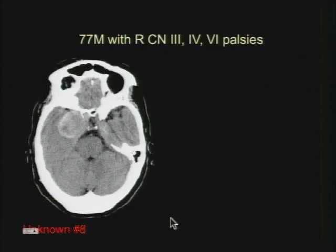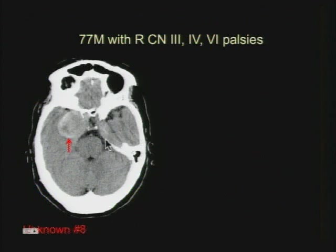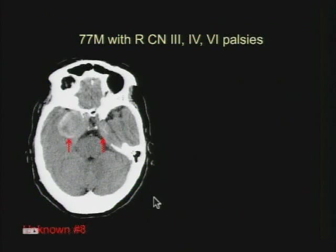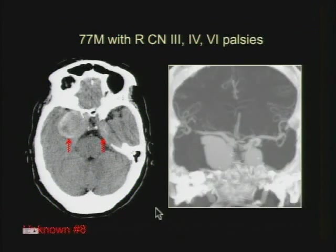The eighth unknown case is a 77-year-old who came in with cranial nerve palsies. All of these nerves are within the cavernous sinus. You can see a very large, rounded, hyperdense mass associated with the cavernous sinus on the right, and a smaller mass associated with the cavernous sinus on the left. These are hyperdense and very rounded — while you may be tempted to think of meningioma, whenever you see this very rounded mass, especially with peripheral calcifications, always be thinking of giant cavernous aneurysms. That's what you're seeing here: two giant cavernous carotid aneurysms.